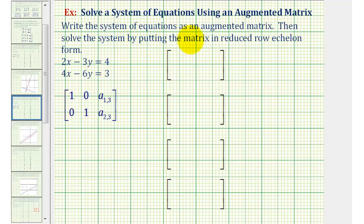We want to write the system of equations as an augmented matrix and then solve the system by writing the matrix in reduced row echelon form. Notice we have a system of two linear equations with two unknowns, so we'll have a two by three augmented matrix. And because our equations are in standard form, we can go ahead and write the augmented matrix.